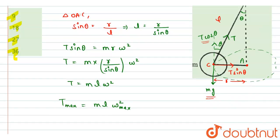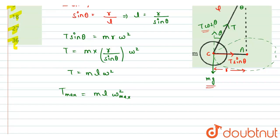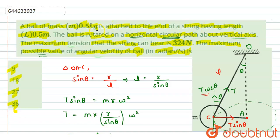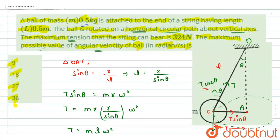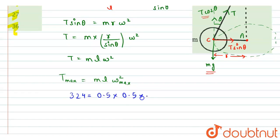So from here, let me put the values. We have the maximum tension in the string is given to be 324 newtons. And the mass of the ball is 0.5 kg. The length of the string is again 0.5 meters, 0.5 meters into omega max whole square.